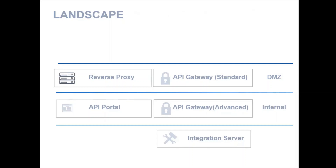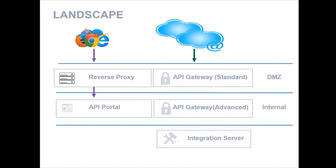Now let's have a look at how the traffic enters the different components. On the left hand side you can see that the internet traffic entering the reverse proxy is directly handed over to the API Portal, which in turn calls any of the backend services through the API Gateway. On the other hand, traffic entering the API Gateway standard is actually protected and is taken into consideration while any threat protection components are activated.